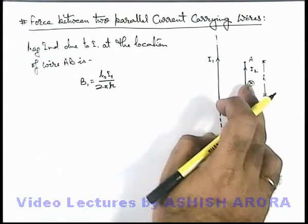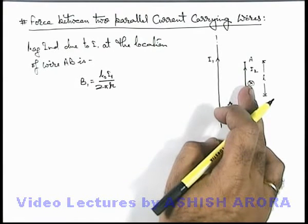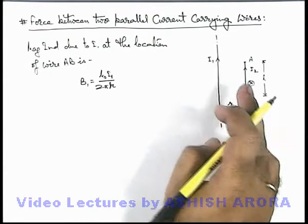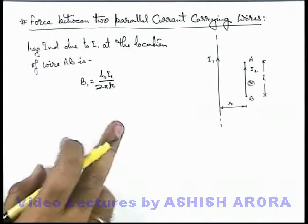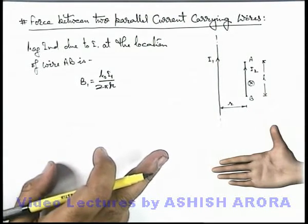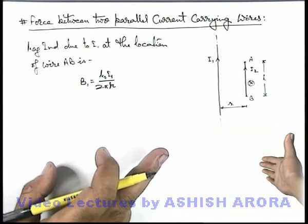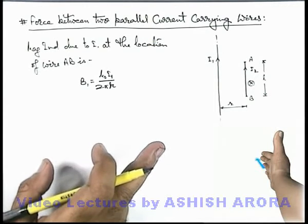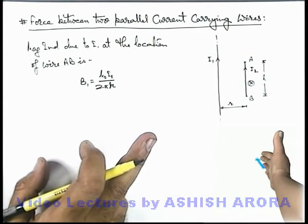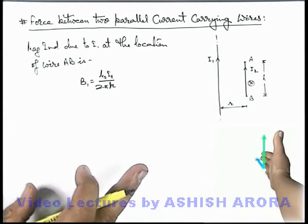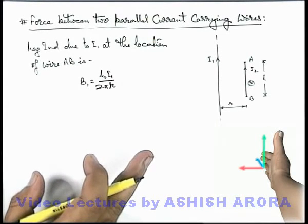If this is the magnetic induction, by using right hand palm rule we can find out the force experienced by wire AB. In this situation we can see the realistic right hand which is pointing its fingers in the inward direction and thumb along the direction of current i₂. So you can see the force experienced by wire AB will be towards the left.